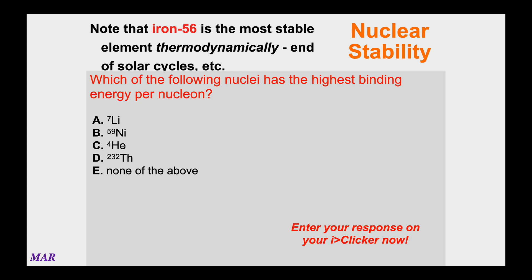Iron-56 is the thermodynamic endpoint for this kind of discussion, so helium and lithium are definitely much lower than iron. Thorium is much higher than iron, but nickel is pretty close to iron. So if you look up the values for the binding energies, the nickel is definitely going to be the closest one. It has the highest binding energy per nucleon because it's closest to iron. That's a nice way to kind of guesstimate on these things, and if you look it up, you'll see that's the answer too.